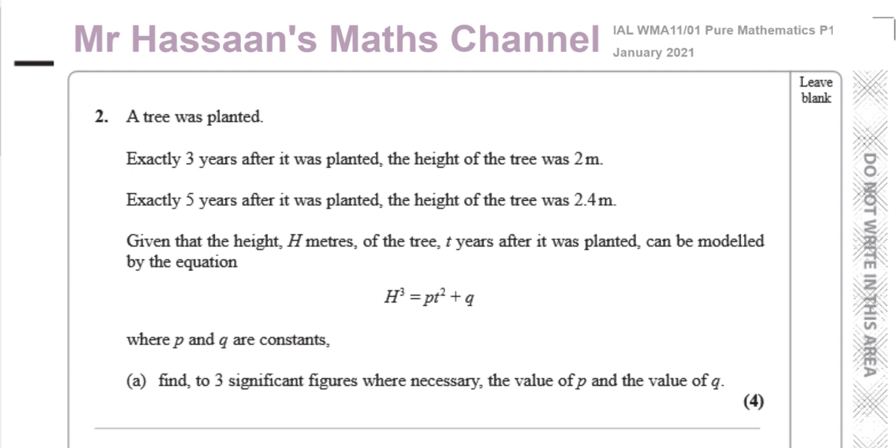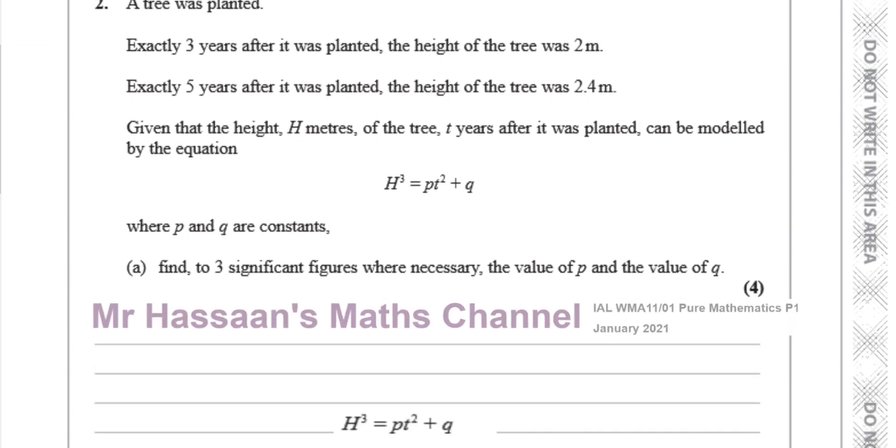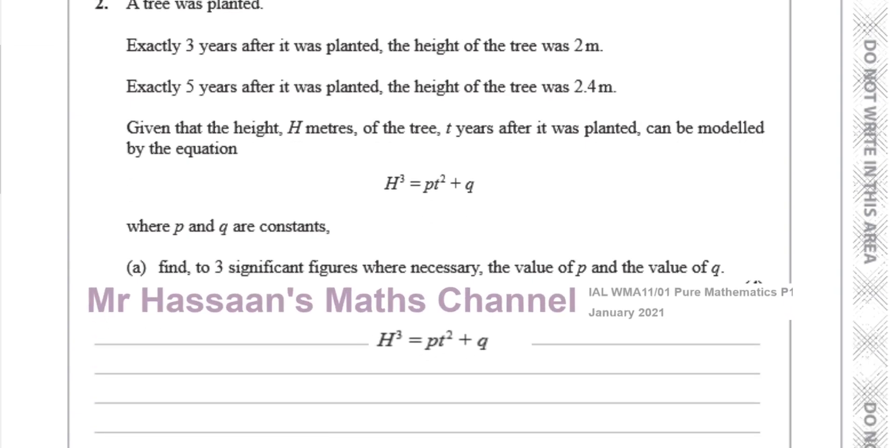Okay, so now we've got three years, two meters, five years, 2.4 meters. So we have two different situations when t is equal to three, that's years, h is equal to two meters. So we have two different situations. We can make two separate equations, so this looks like a typical type of simultaneous equation problem.